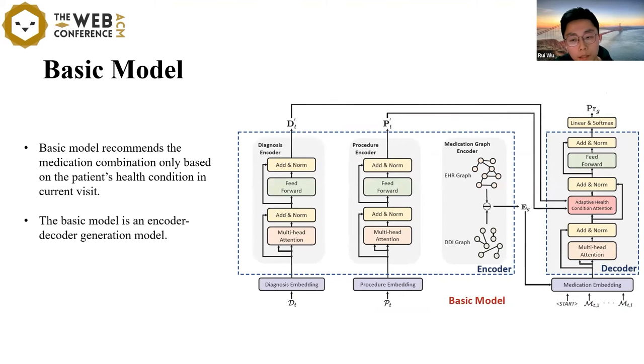The basic model recommends the medication combination only based on the patient's health condition in current visits. The basic model is an encoder-decoder generation model. It consists of four modules: diagnosis encoder, procedure encoder, medication graph encoder, and medication combination decoder. Next, I will introduce these four modules separately.